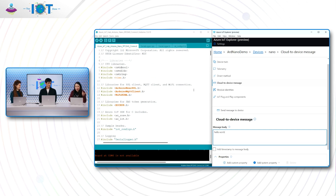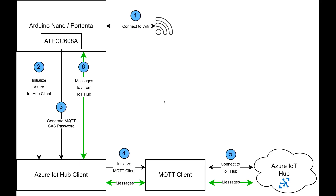Can you tell me a little bit more about how these samples are architected? I'll pull up the diagram. Basically there's a series of very simple steps — we've simplified it so you don't have to read the code. The first step is to connect the board to Wi-Fi: the Arduino Nano or Portenta connects to Wi-Fi. After that, we initialize the Azure IoT Hub client, which gets the credentials into a client so we can initiate the connection.